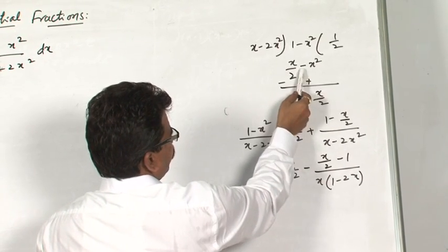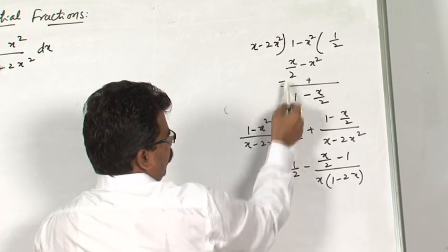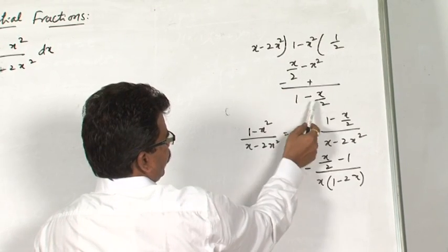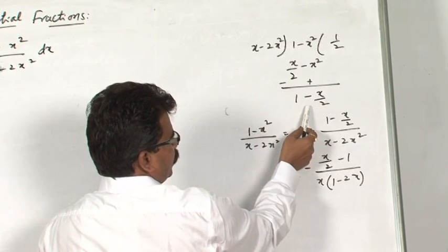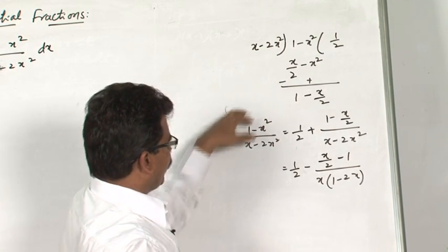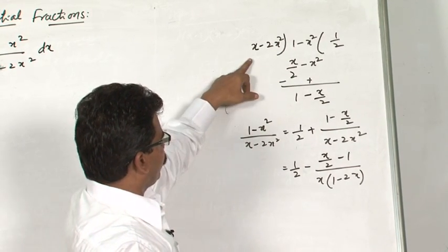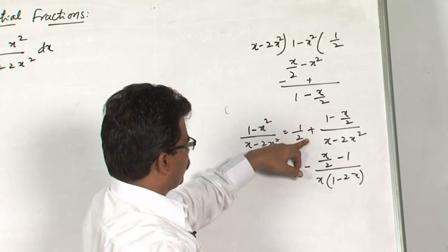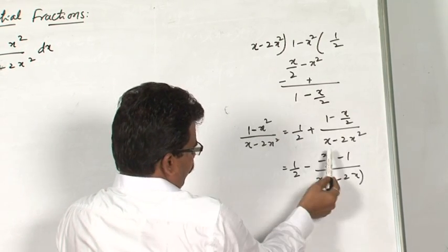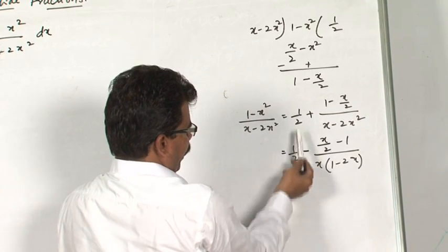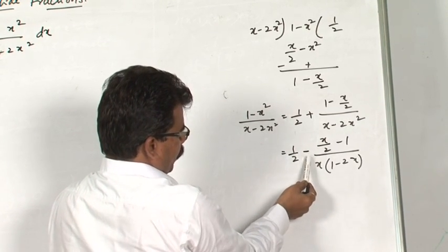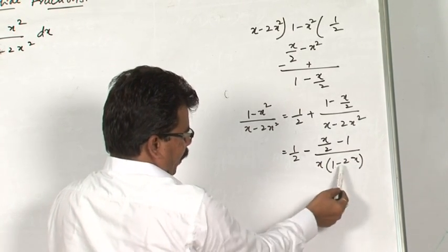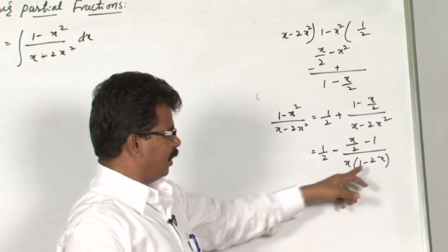To convert to a proper rational function, divide 1 − x² by x − 2x². Taking 1/2 as the quotient: 1/2 times (x − 2x²) gives x/2 − x². Subtracting: (1 − x²) minus (x/2 − x²) leaves 1 − x/2 as the remainder, and the x² terms cancel. By the division algorithm, (1 − x²)/(x − 2x²) = 1/2 + (1 − x/2)/(x − 2x²).